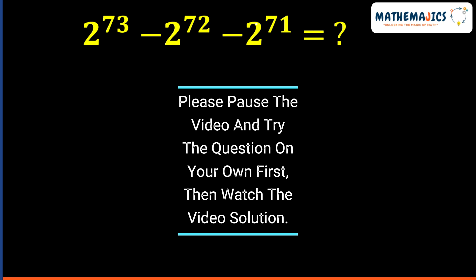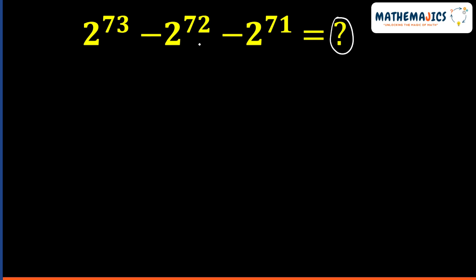In this question, we need to find the value of this expression. So for this, I took 2 raised to power 71, which is smallest among the three terms, as common. I took it as a common term 2 raised to power 71. And I was left with 2 raised to power 2 minus 2 raised to power 1 minus 1.